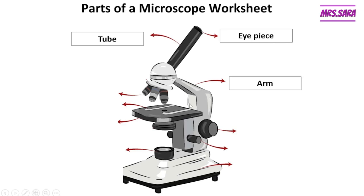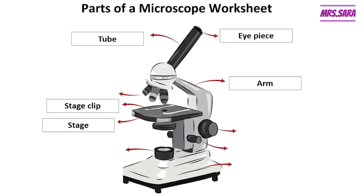This part is called the arm. You hold the microscope from this part. This flat part is called the stage — this is the place where you put the slide. This silver part is called the stage clip. We use the stage clip to fix the slide on the stage.